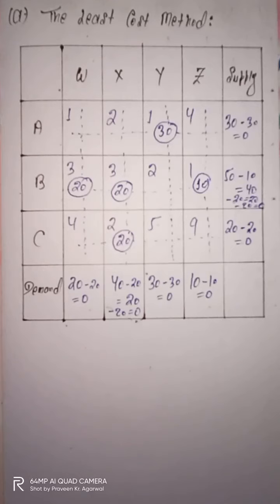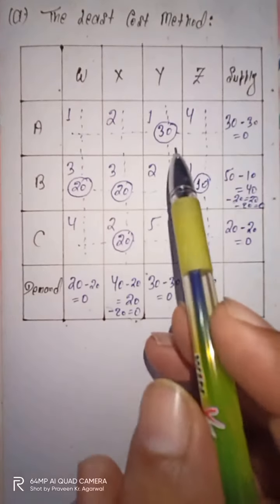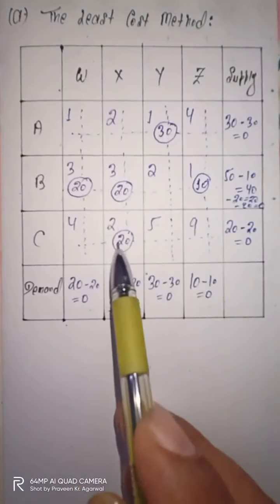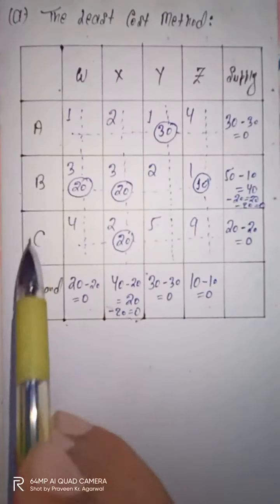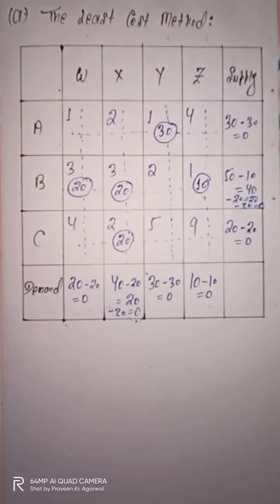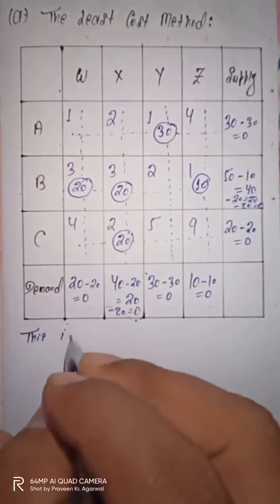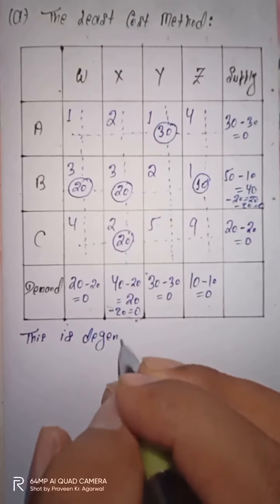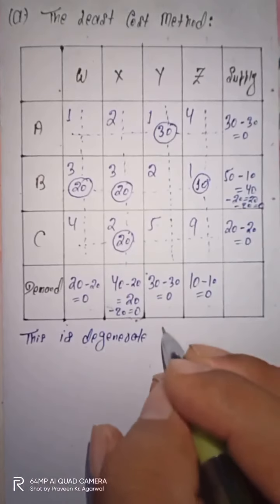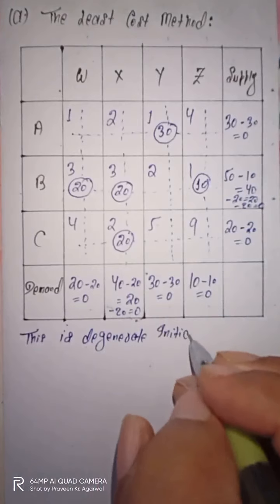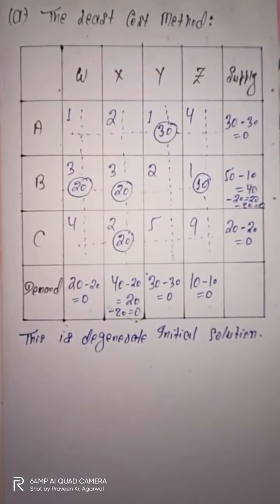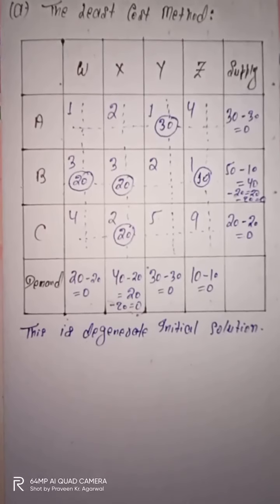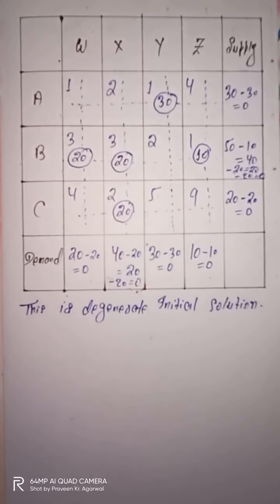Now we will check whether the solution is degenerate or non-degenerate. The number of allocations obtained is 5. The required number is m plus n minus 1, where m equals 3 rows and n equals 4 columns, so 3 plus 4 minus 1 equals 6. We have 5 but need 6, which means this is a degenerate initial solution. We will discuss how to convert a degenerate solution to a non-degenerate one in further lectures.